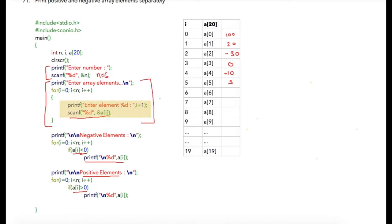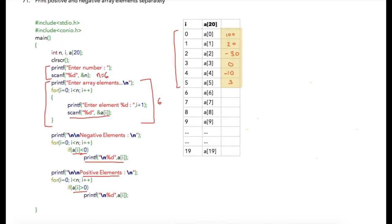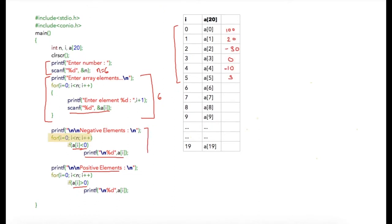Suppose the user has entered 6 as the value of n. Then this block will accept 6 array elements, starting from index 0 till 5. Suppose the user has entered 120, -30, 0, -10, and 3 as the array elements. In the second loop we are going to print the negative elements.